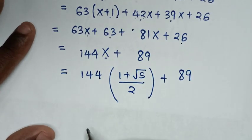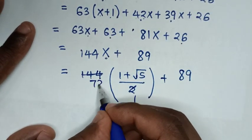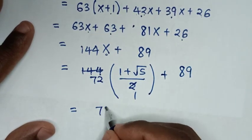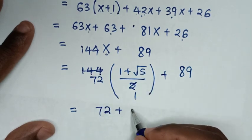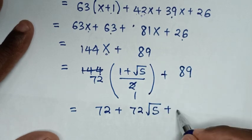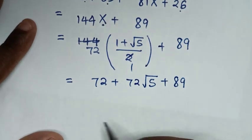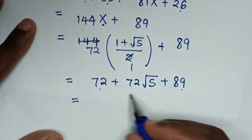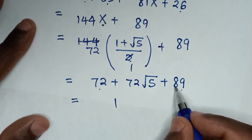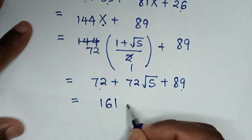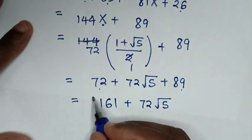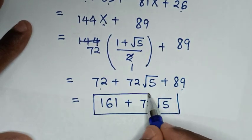Now to simplify, 2 will cancel — dividing by 2 — then it will be equal to 72 times 1 is 72, then plus 72 times square root of 5 is 72 square root of 5, then plus 89. So it will be equal to 72 plus 89 is 161, then plus 72 square root of 5. Therefore, this is the simplified form of our problem.